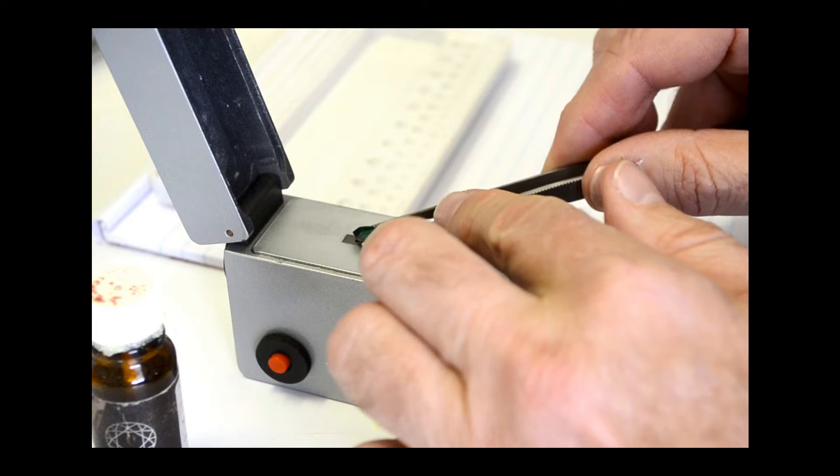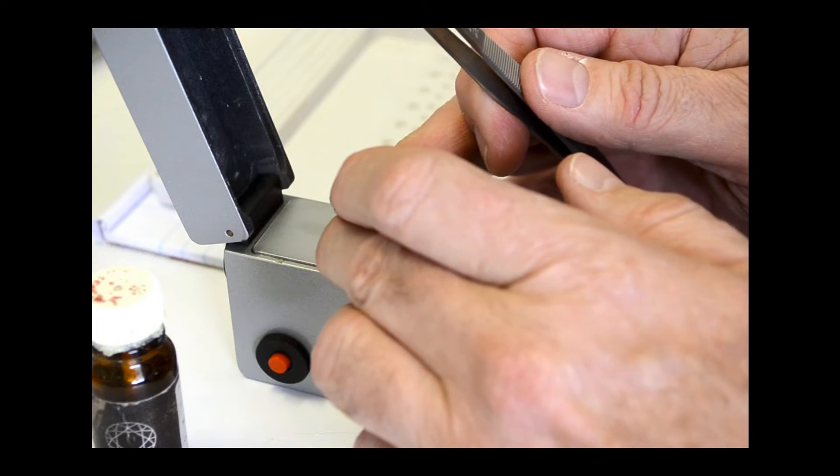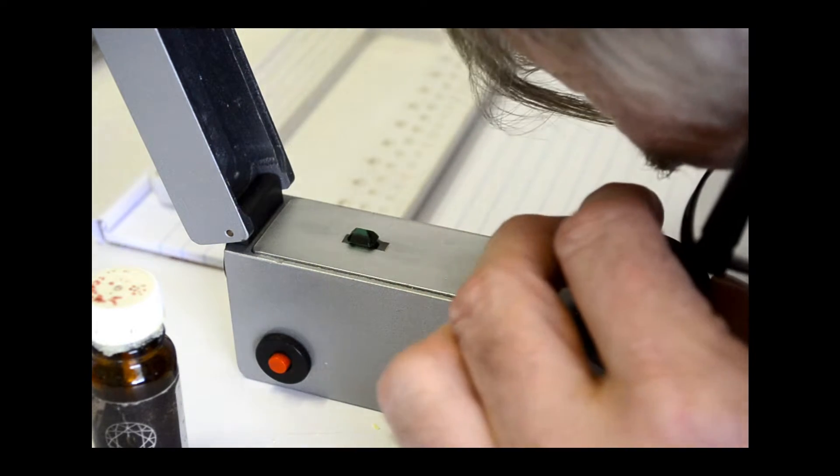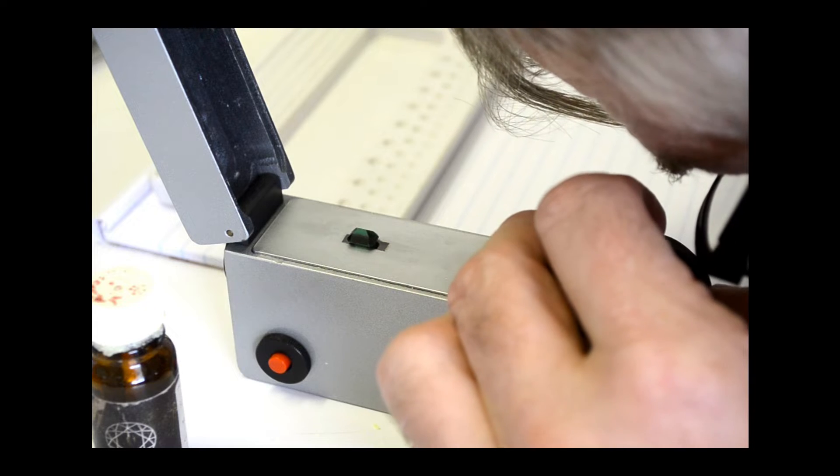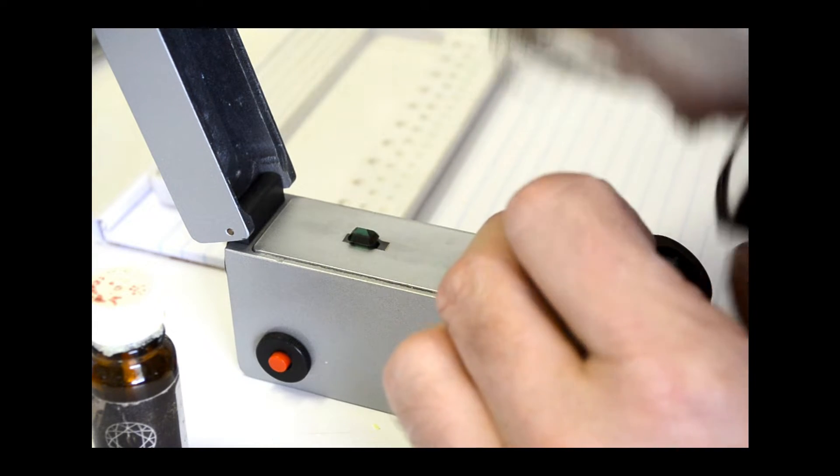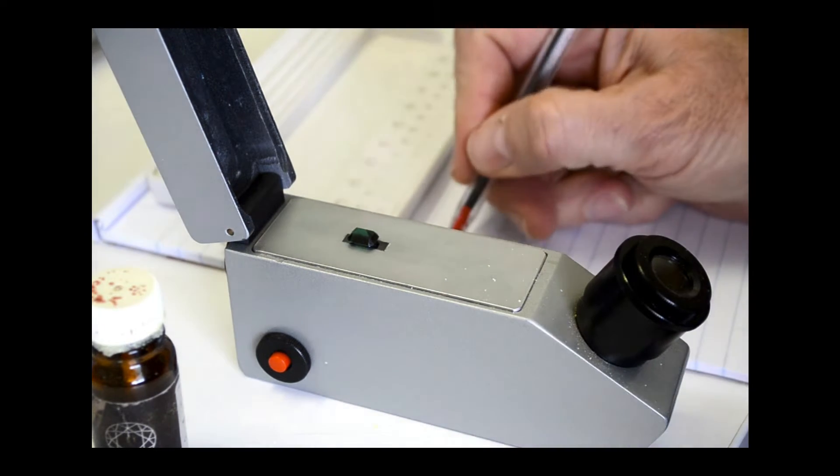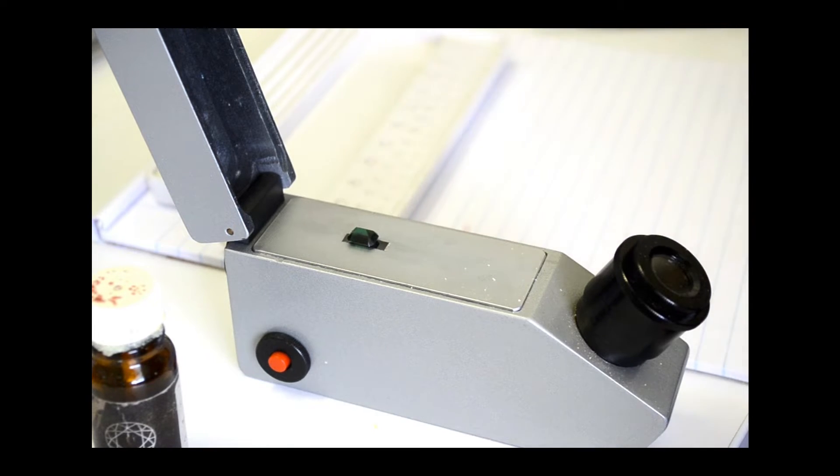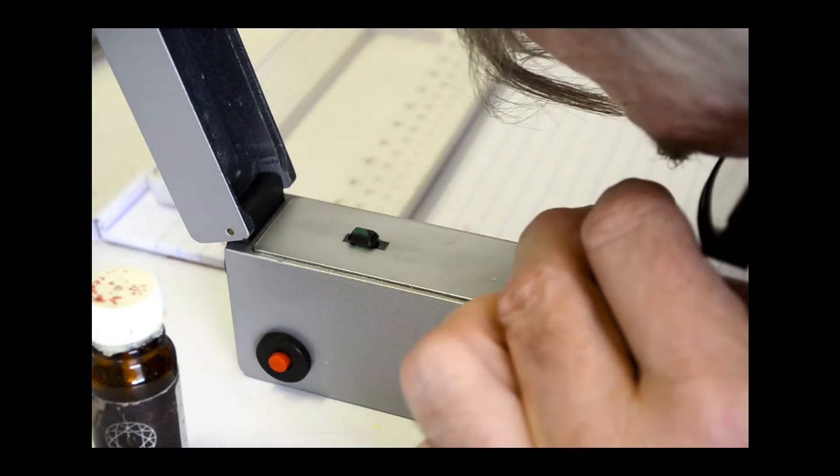First step is to check the refractive index. Table down the RR is 1.725, which is not emerald, which would have been around 1.57 to 1.58. 1.725 is an indication of synthetic spinel.